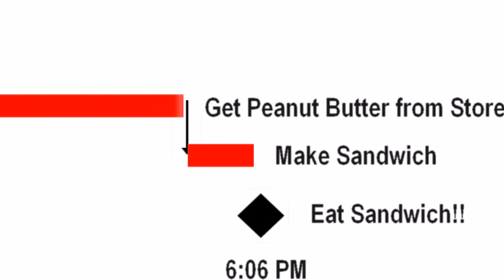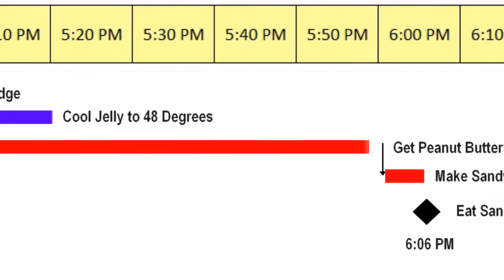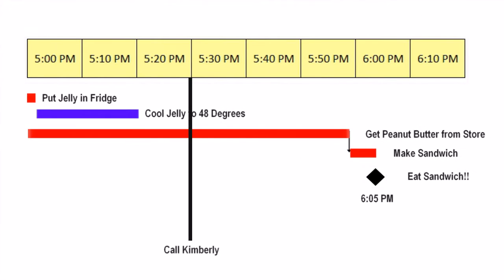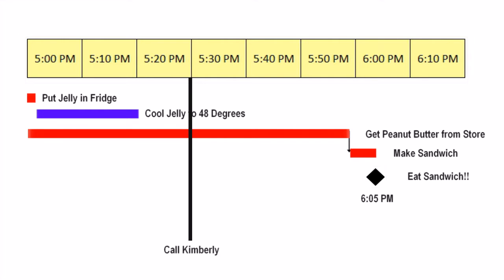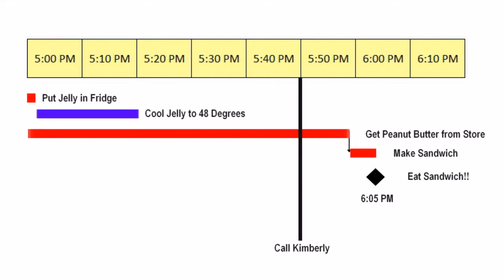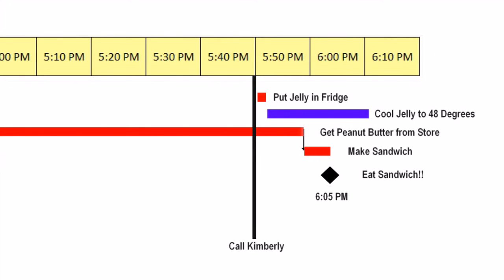Now, say my sister Kimberly is at the house and she said she could put the jelly in the fridge for me so I wouldn't have to worry about it. Well now, I could leave the house immediately and shave off a whole minute so I could potentially eat my sandwich at 6:05. I get out on the road and I call her at 5:30 to remind her to put my jelly in the refrigerator, but she doesn't answer. I keep calling, but she's not picking up. Finally, at 5:50, as I'm on my way home, I get a hold of her and she said she's just putting the jelly in the fridge. Well, this is just great. Now, I'll be home at 6 o'clock, but the jelly won't be cool until 6:10 because it takes 20 minutes to cool and it's 5:50 right now.